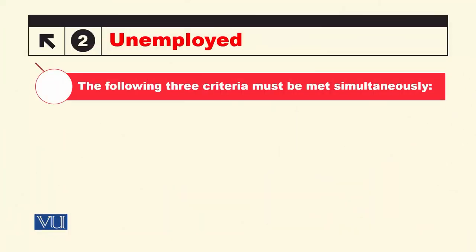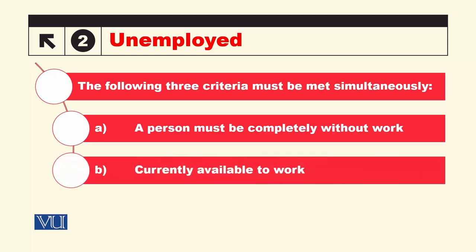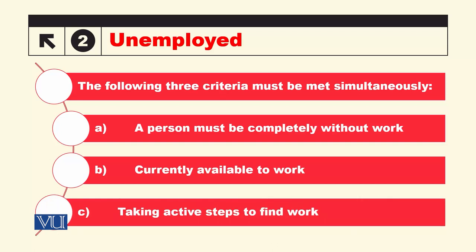Unemployed ki definition ke liye teen cheezon ka hona zaroori hai. The person should be in the working age group — number one, this person must be completely without work. Number two, currently available to work — he or she is actively looking for work but is unable to find work, even for just one hour in the last week. And thirdly, wo actively kaam ke liye available bhi hai aur kaam ke liye pursue bhi kar raha hai. So yeh teeno cheezein jab simultaneously maujood hongi, then a person will be considered as unemployed.